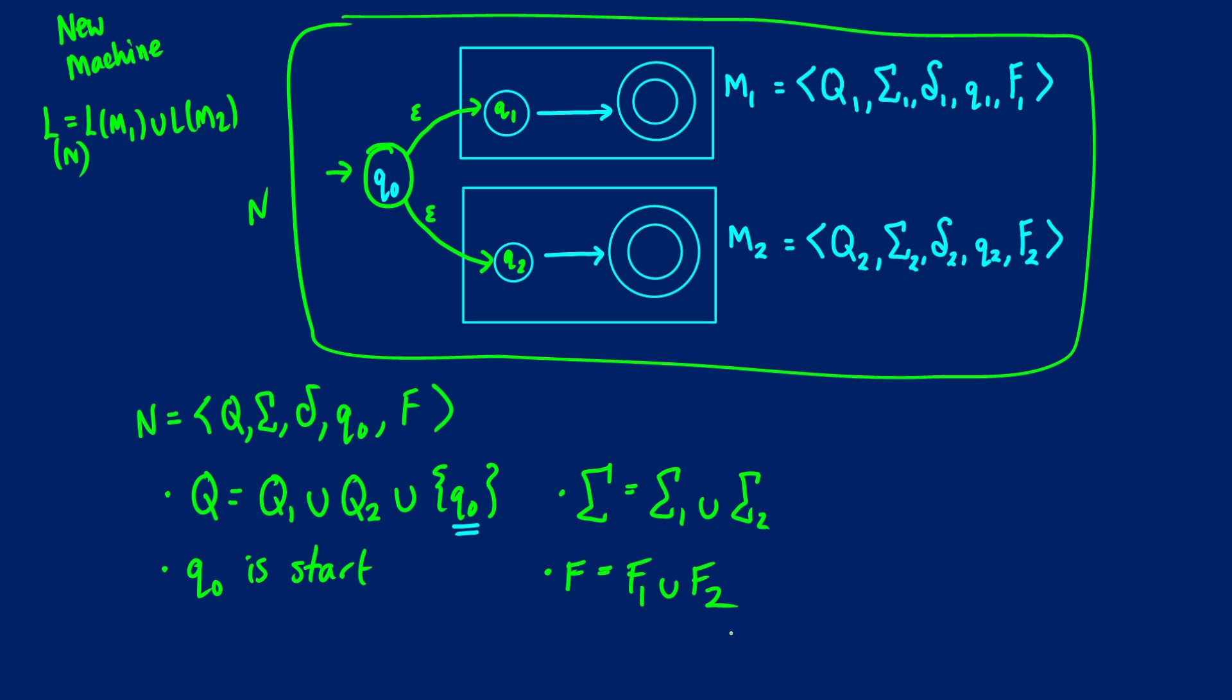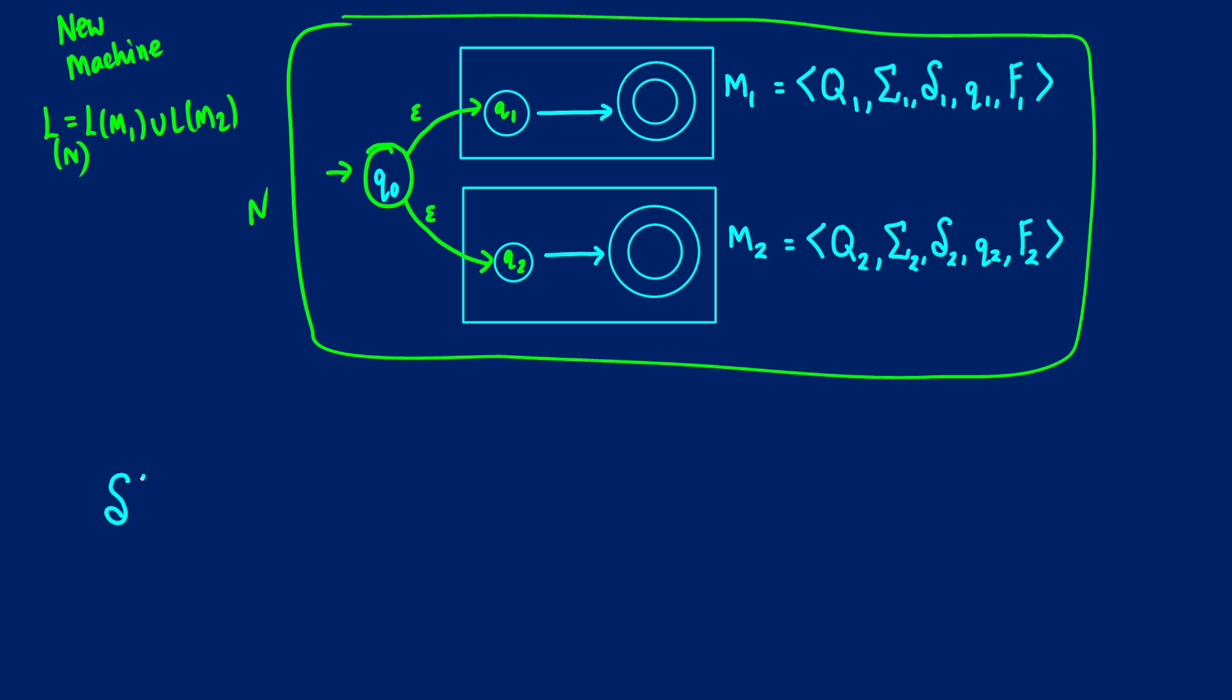Now for the transition function, this is where things get a little bit more complicated. So I'm just going to get rid of this and leave this image on the screen so we can take a look at it. For a transition function, what we're taking is a node, a state, and then we're taking an input. What we're going to get is going to depend on where we're going because we still have some machines that we want to take care of from before. For example, if we're in machine 1, we want to use the old transition function that we have.